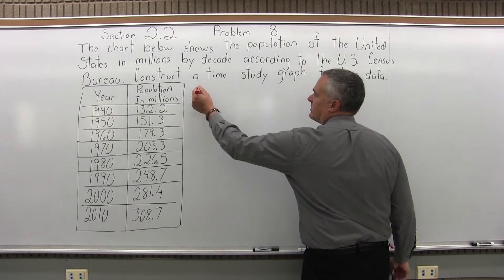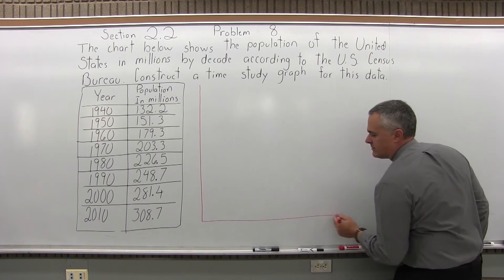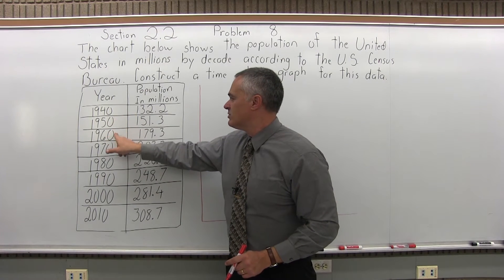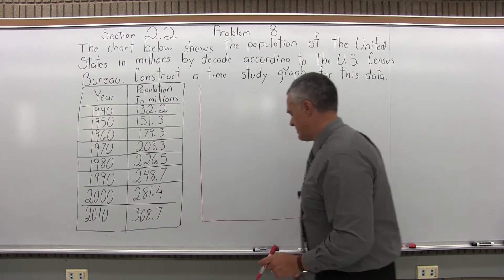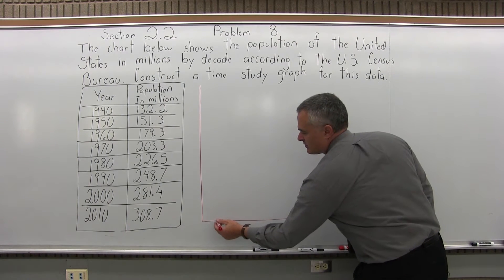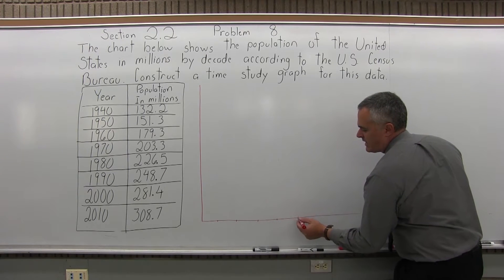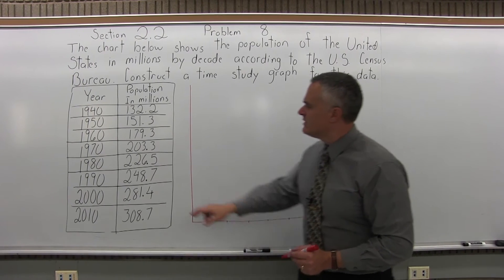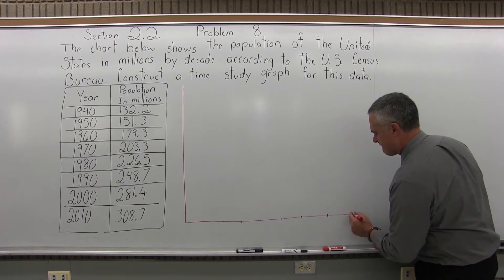So let's set it up. So the left edge will require a number scale, and I'll figure that out in a little bit. Along the bottom we'll have these different years, so I'm going to have to have one, two, three, four, five, six, seven, eight different years listed.